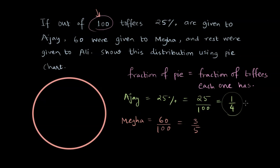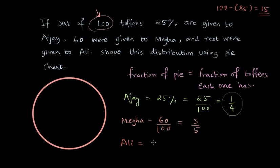Now let's think about how many toffees Ali has received — he gets the rest. Since 25 toffees were given to Ajay and 60 to Megha, already 85 toffees have been consumed. Out of 100, that means Ali gets 15 toffees. So Ali's fraction is 15/100, which is equivalent to 3/20.